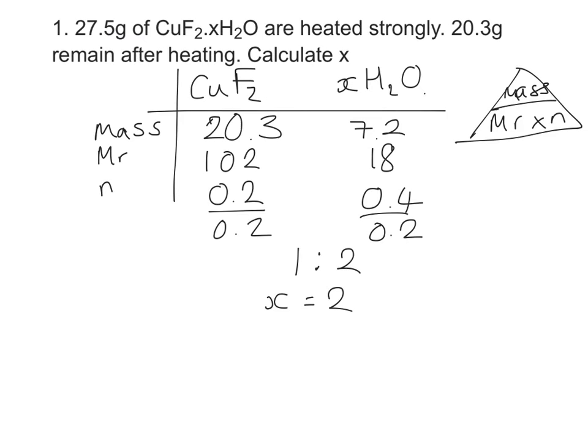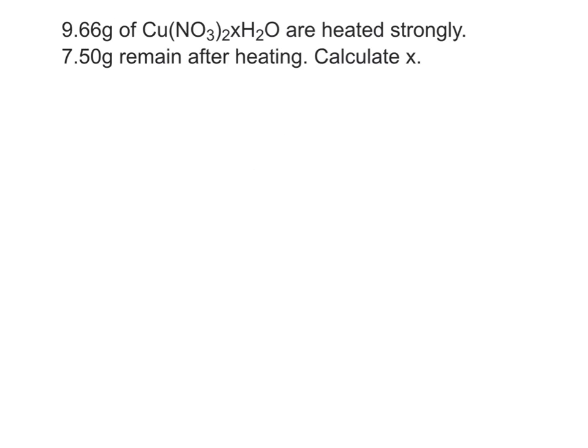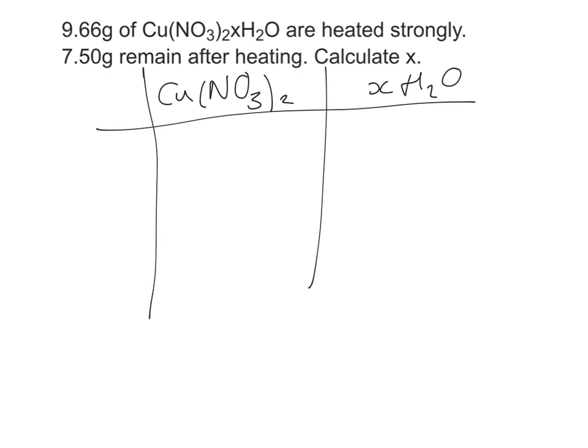Let's look at another example. So in this question we have 9.66 grams of copper nitrate, Cu(NO₃)₂·xH₂O, combined with water, they're heated strongly, 7.5 grams remain after heating, calculate x. So I'm going to use exactly the same methodology as before, so I'm going to write my two substances at the top, so that's copper nitrate, copying down the formula exactly, and water. I'm going to draw my table and let's go for it.